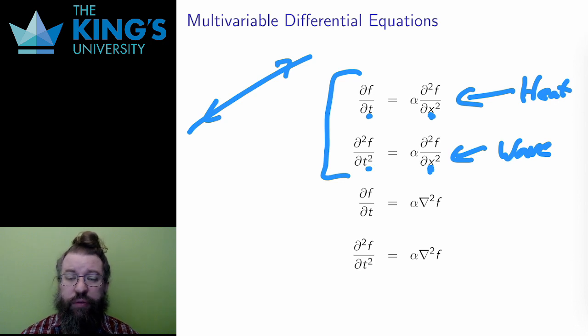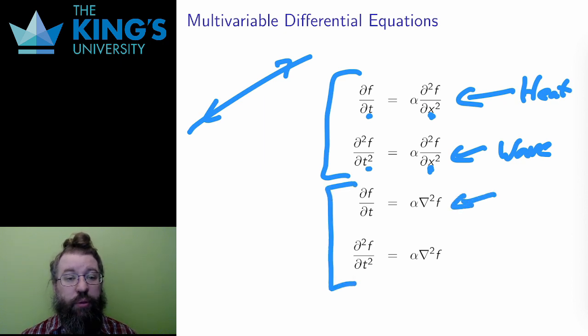However, heat diffusion and wave propagation happen in three dimensions in the world. The single variable versions are useful learning models and have some specialized application where a system can be reduced to a single direction, but they are not particularly general. I need the three-dimensional versions. Those versions have the same left side, the time derivatives, but the right side now needs a second derivative in multiple variables. The tool that does this is the Laplacian. These two latter equations govern heat diffusion and wave propagation in three variables.